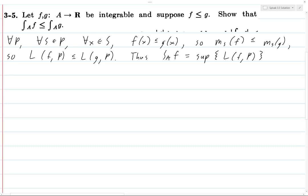Of course, we're taking the supremum over all partitions P. So since that inequality holds, supremum of L of F,P is less than or equal to the supremum of L of G,P. And G is integrable, so this is precisely the integral over A of G, and we're done.